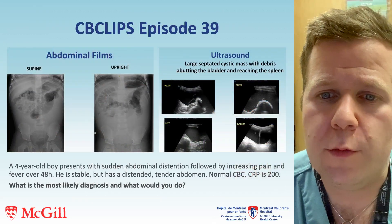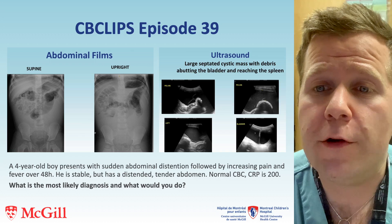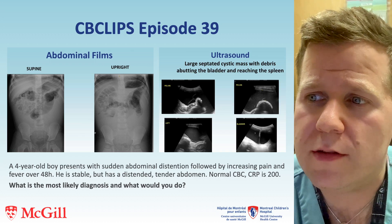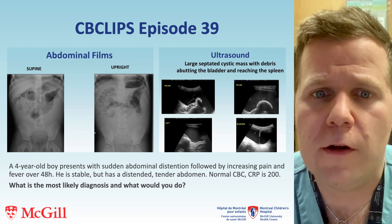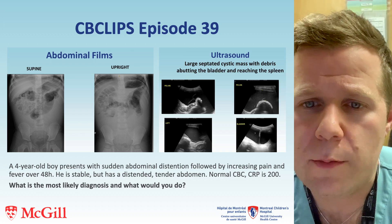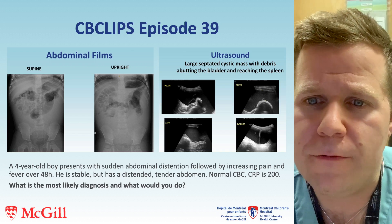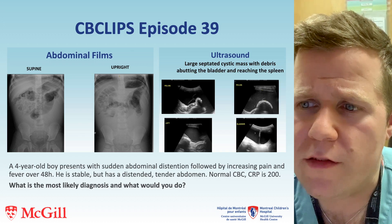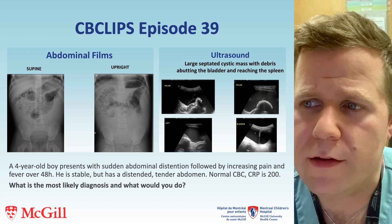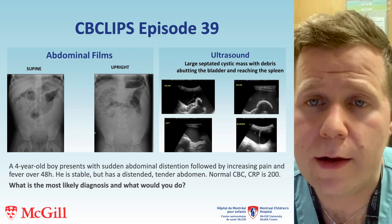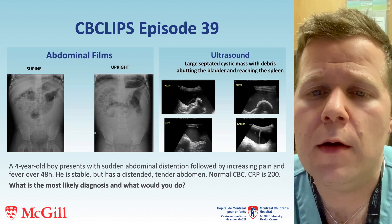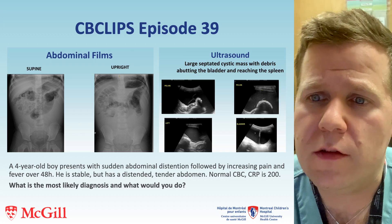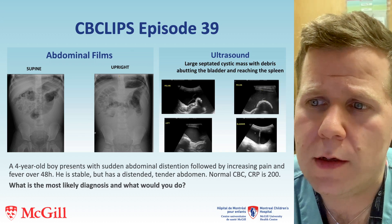In this episode we discuss a four-year-old boy who presented with a history of sudden abdominal distension followed by increasing abdominal pain and fever over 48 hours. He was stable on presentation but had a distended and tender abdomen on exam. His CBC was normal but his CRP was elevated at 200.